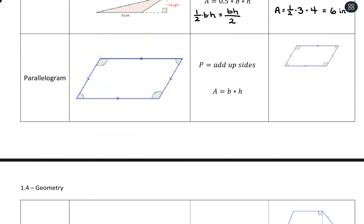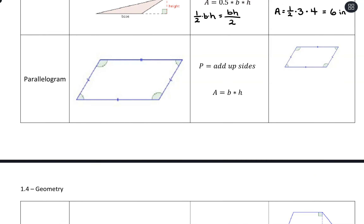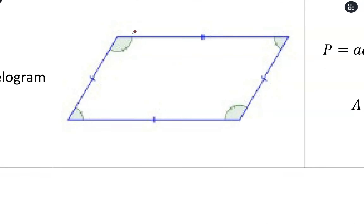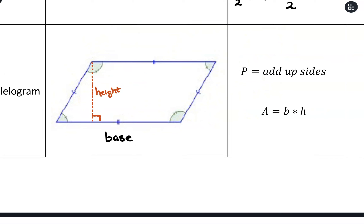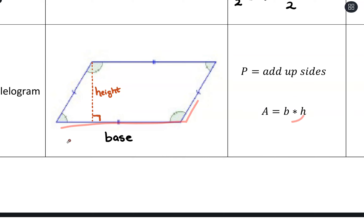These next ones we won't see too often, but let's cover them. A parallelogram has pairs of parallel sides — those two sides are parallel, and then the other two sides are parallel to each other. The base is along the bottom, and the height, similar to triangles, is found by dropping a perpendicular. For perimeter, we go along the outside and add up the side lengths. For area, we just take base times height.